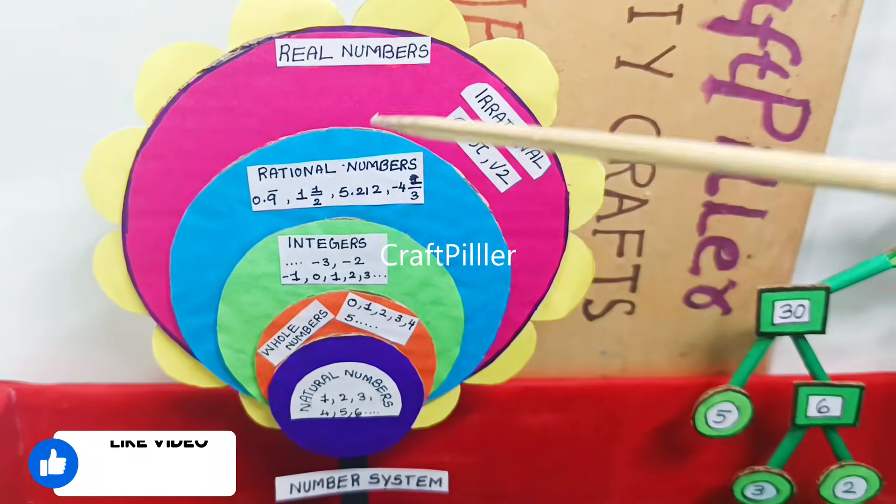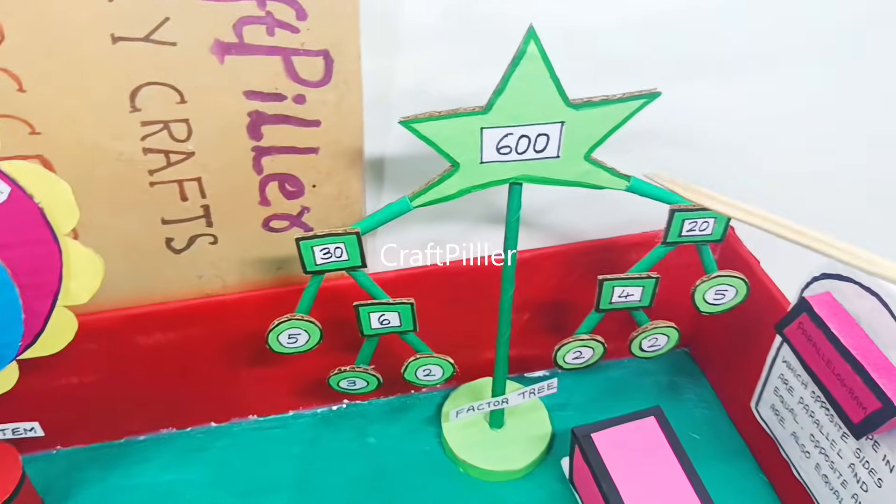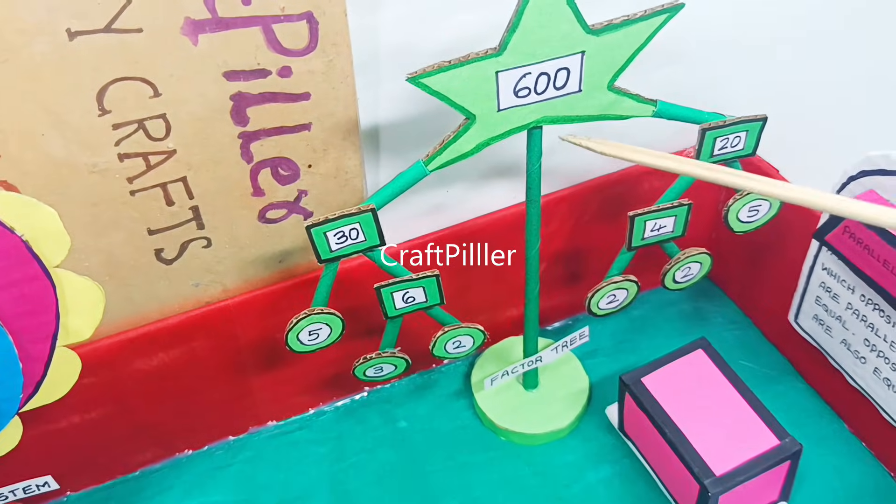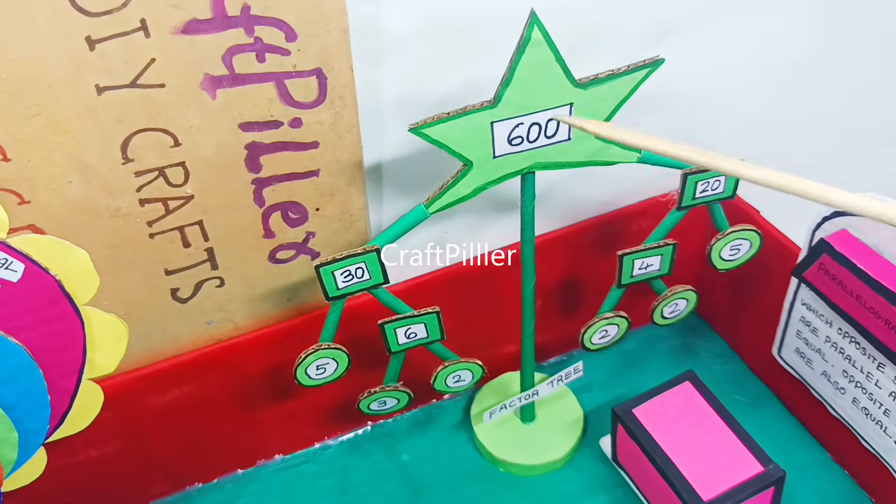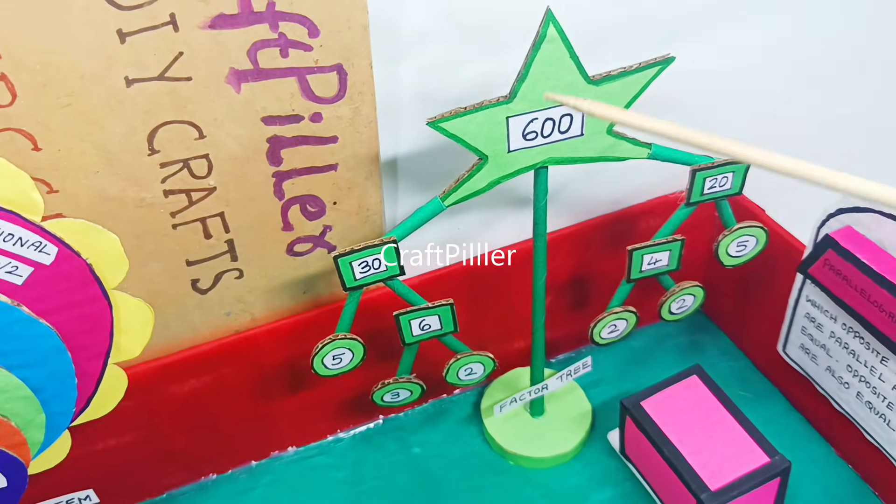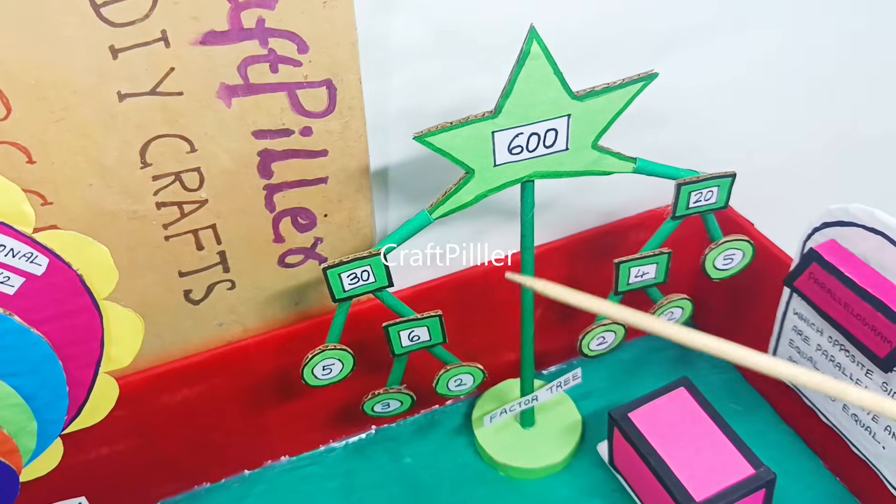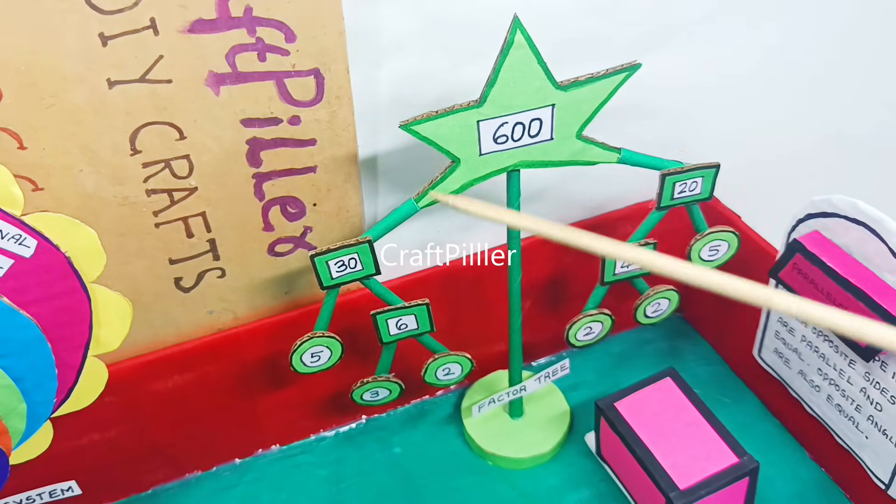The next item we are displaying in the park is the factor tree, also called a number tree, which is used in mathematics to display the factors of a given number. The 600 factors we are breaking down further with 30 and 20 as factors.